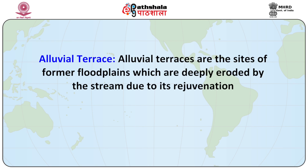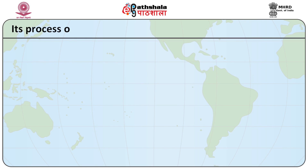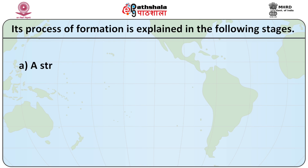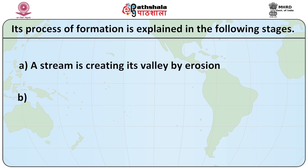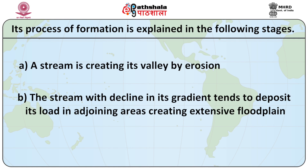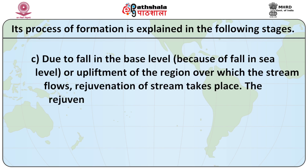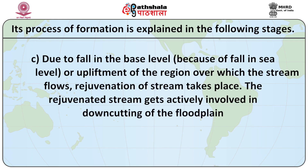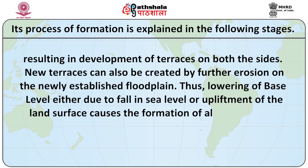Alluvial terraces are the sites of former flood plains which are deeply eroded by the stream due to its rejuvenation. A stream creates its valley by erosion. A stream which declines in its gradient tends to deposit its load in adjoining areas, creating extensive flood plains. Due to a fall in the base level — caused by a fall in the sea level or upliftment of the region over which the stream flows — rejuvenation of the stream takes place. The rejuvenated stream gets actively involved in downcutting of the flood plain, resulting in development of terraces on both sides. New terraces can also be created by further erosion on the newly established flood plain. Thus, lowering of base level either due to fall in sea level or upliftment of the land surface causes the formation of alluvial terraces.